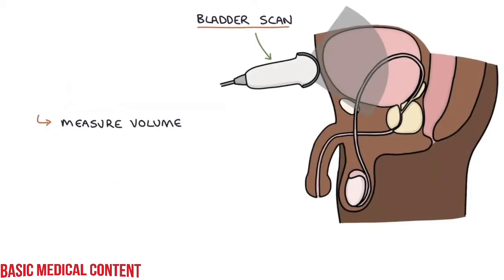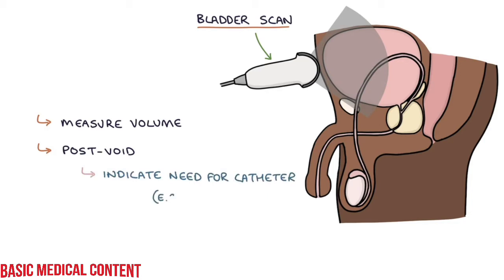A bladder scanner can be used to measure the volume of urine in the bladder. A post-void bladder scan, measured after the patient attempts to empty their bladder, can indicate the need for a catheter. For example, if they've opened their bladder as well as they can and still have more than 500 milliliters remaining, this is an indication for a catheter.